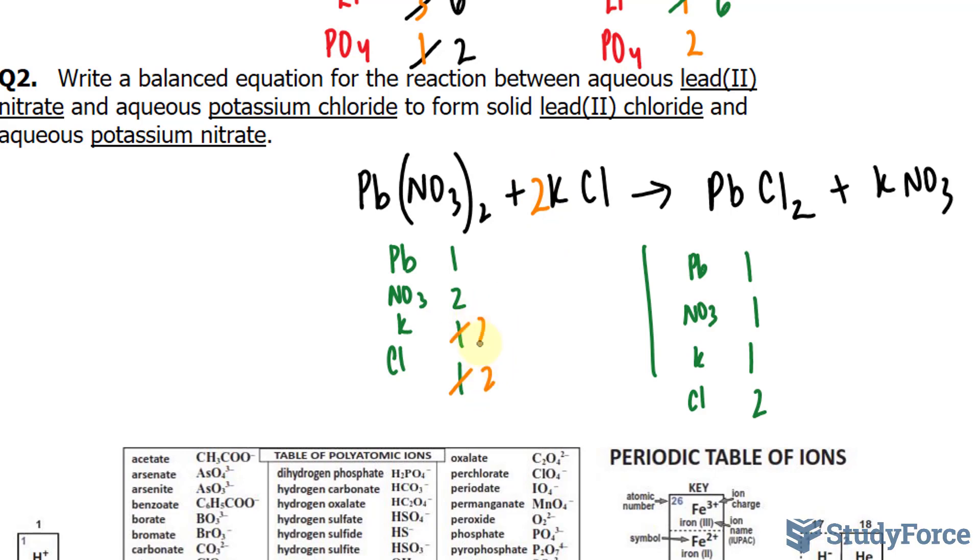Let's start by multiplying this by 2. Now we have 2 chlorines, 2 potassiums. The chlorines are balanced, the potassiums are not, and neither are the nitrates.